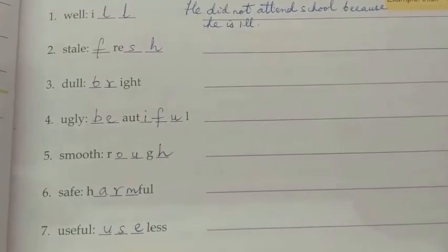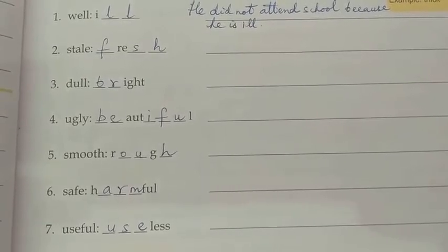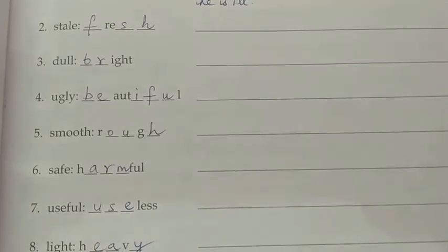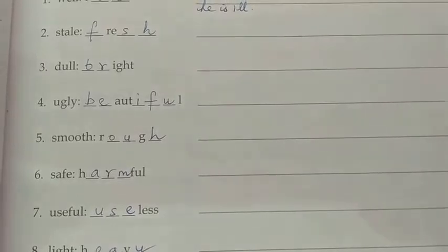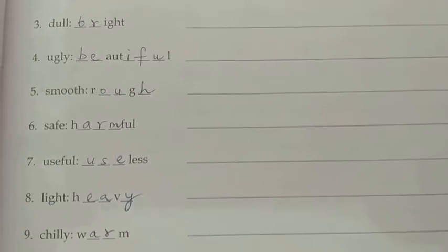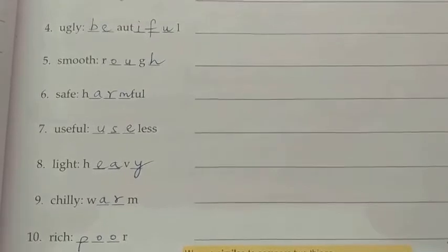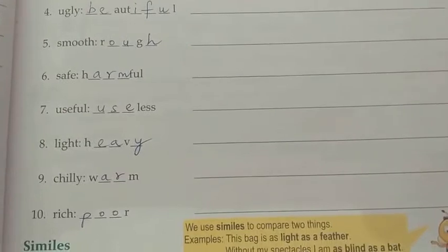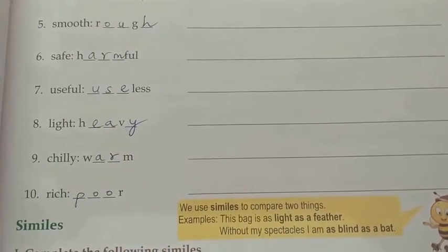Number five: smooth. Smooth ka antonym hai rough — R-O-U-G-H. Number six: safe. Safe ka antonym hai harmful — H-A-R-M-F-U-L. Number seven: useful. Useful ka antonym hai, opposite hai, useless — U-S-E-L-E-S-S. Number eight: light. Light ka antonym hai heavy — H-E-A-V-Y.